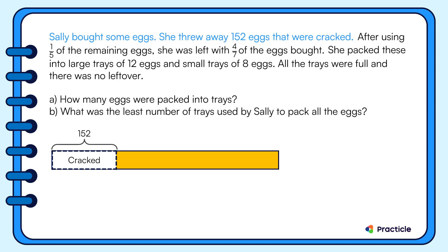After throwing the cracked eggs, she should have some eggs left, so this part represents the remaining eggs. Here's where it gets a little confusing: after using one-fifth of the remaining eggs, she was left with four-sevenths of the eggs bought. Let's try to understand what this sentence means and crack this fraction problem.